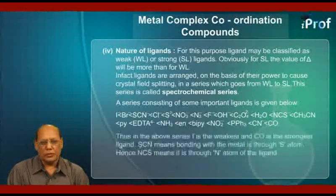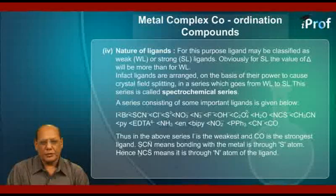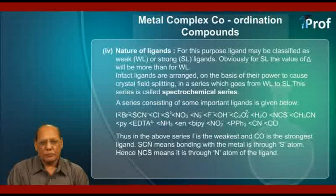Thus, in the above series, iodide ion is the weakest and carbon monoxide is the strongest ligand. SCN⁻, in which sulfur is underlined, means bonding with the metal is through the sulfur atom. Hence, NCS⁻, with nitrogen underlined, means bonding is through the nitrogen atom of the ligand.